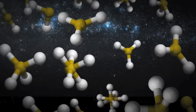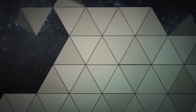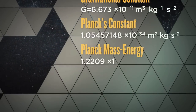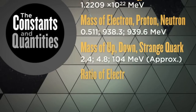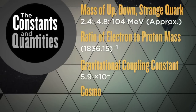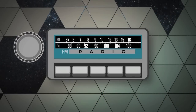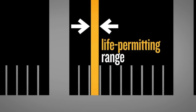From galaxies and stars down to atoms and subatomic particles, the very structure of our universe is determined by these numbers — the fundamental constants and quantities of the universe. Scientists have come to the shocking realization that each of these numbers has been carefully dialed to an astonishingly precise value, a value that falls within an exceedingly narrow, life-permitting range.